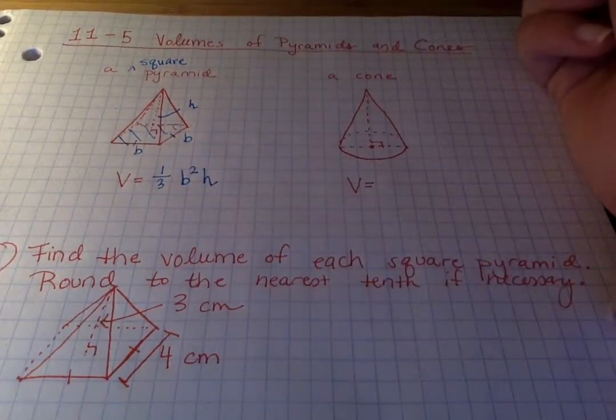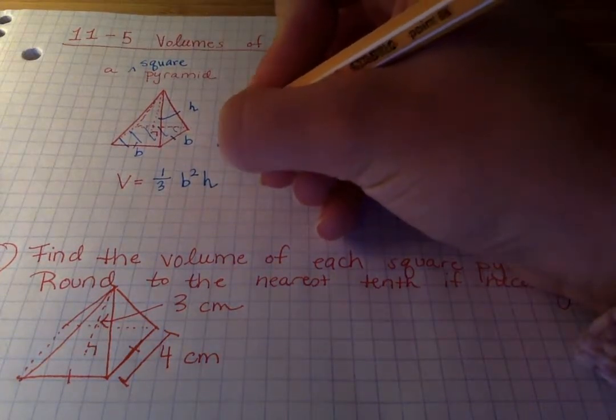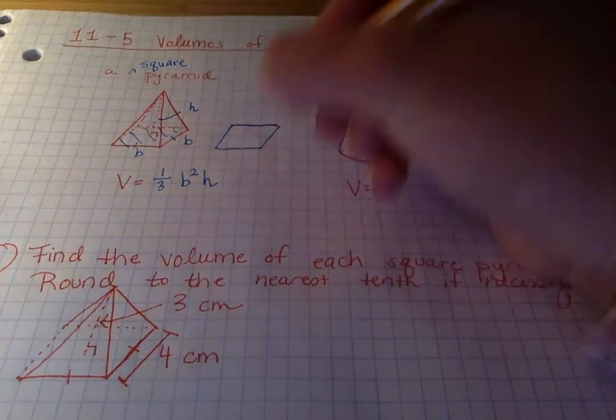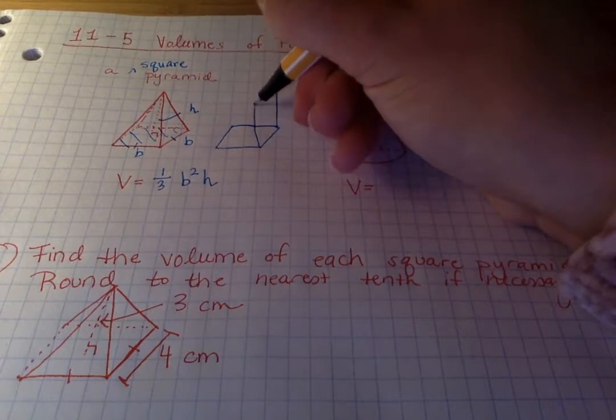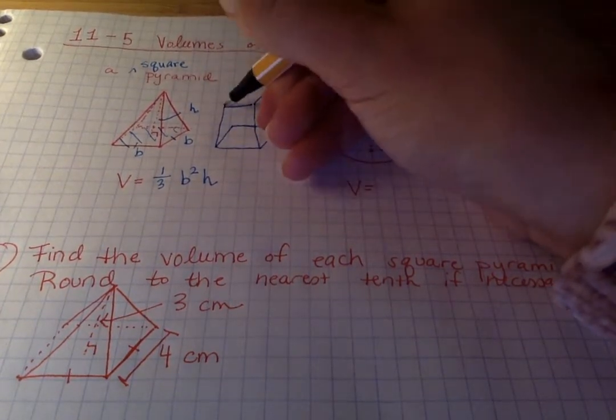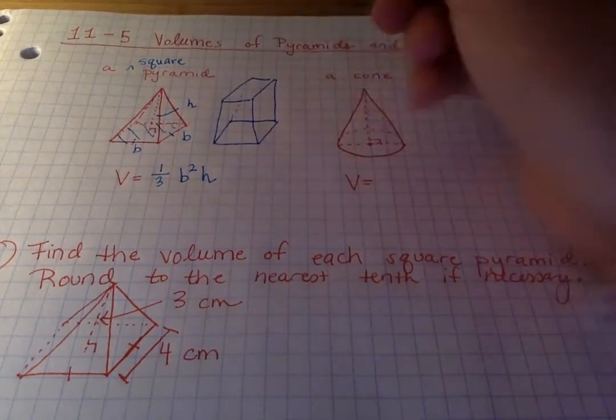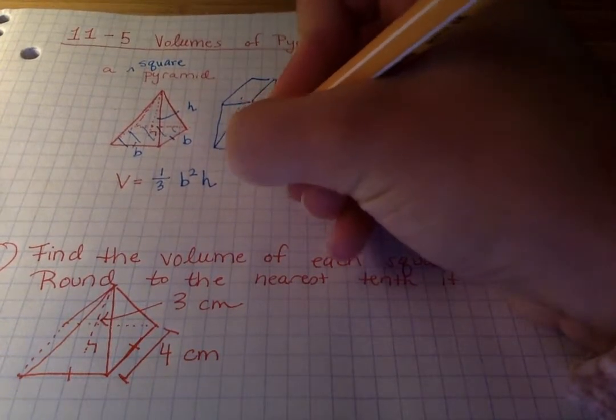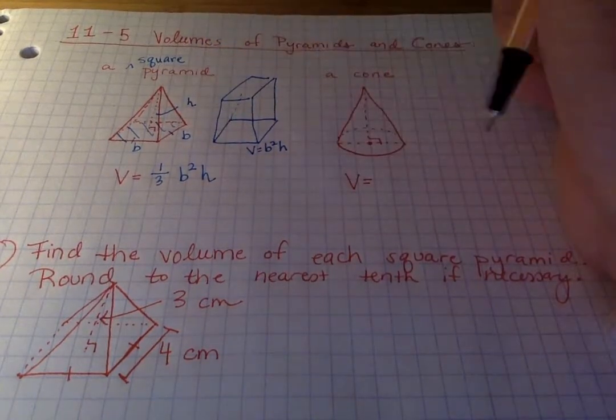So this is actually very similar to the volume equation for a square cylinder, or a square prism, forgive me. So that would be a square prism. And the equation for that one would be base squared height. That would be the volume of this prism. So note that for a pyramid, we just take one-third of the square prism.